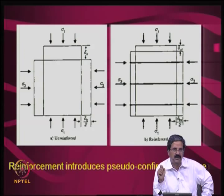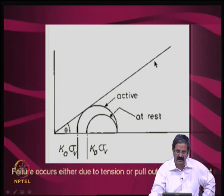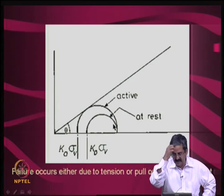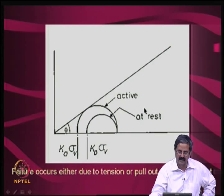As long as the Mohr circle is below the failure line, there is no failure. If you apply more force σ_v, it again mobilizes an equivalent pseudo-confining pressure K₀·σ_v, and one more circle can come — still below the failure line, so it is safe. You can keep increasing σ_v and as long as the circles remain within the failure envelope, the system is safe.